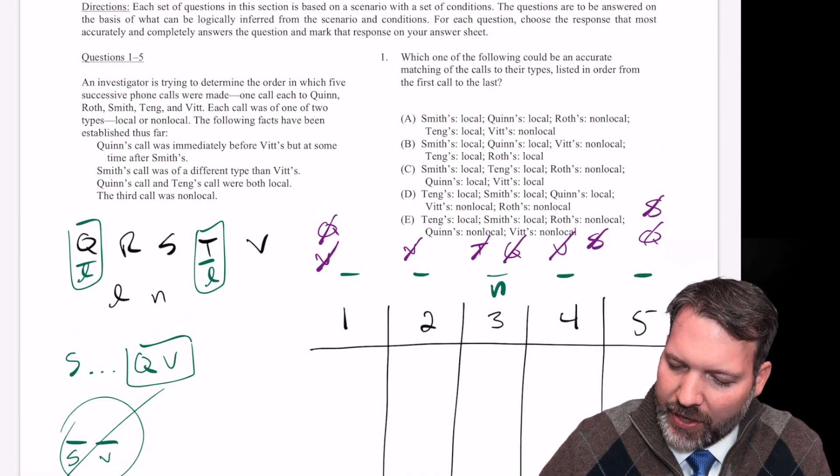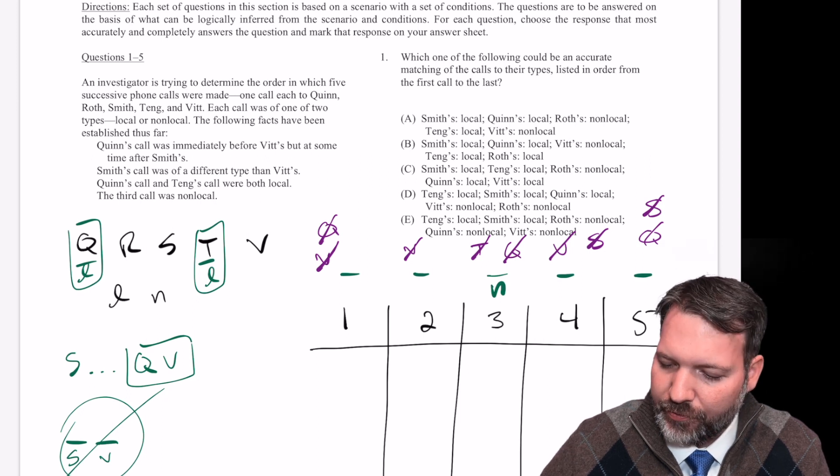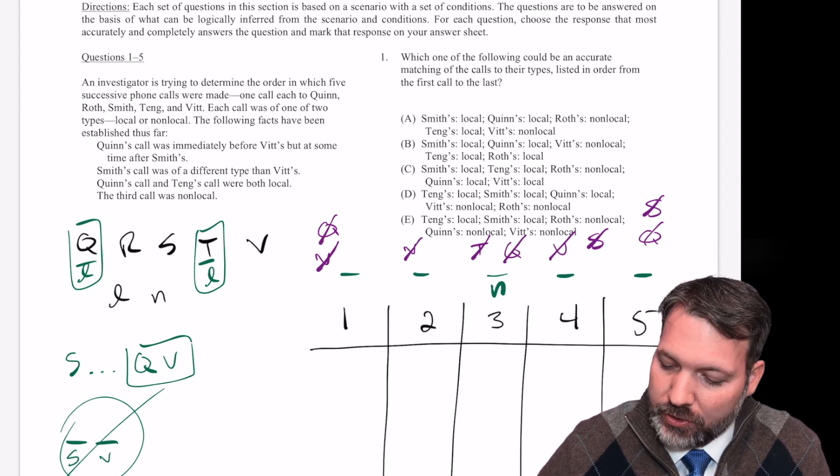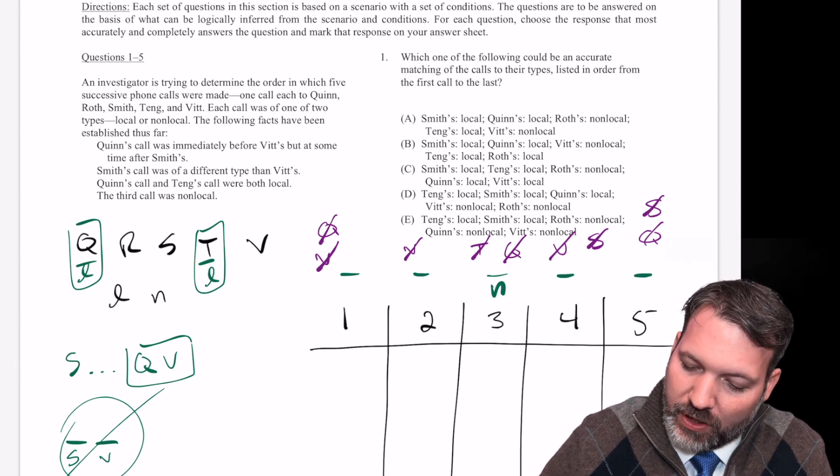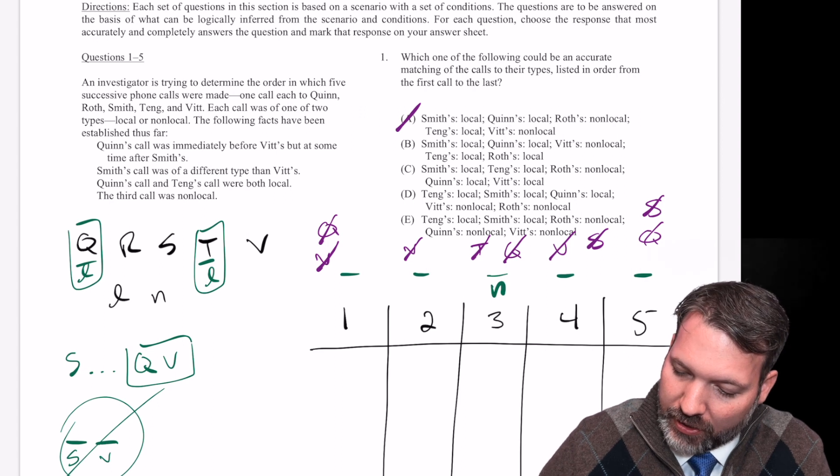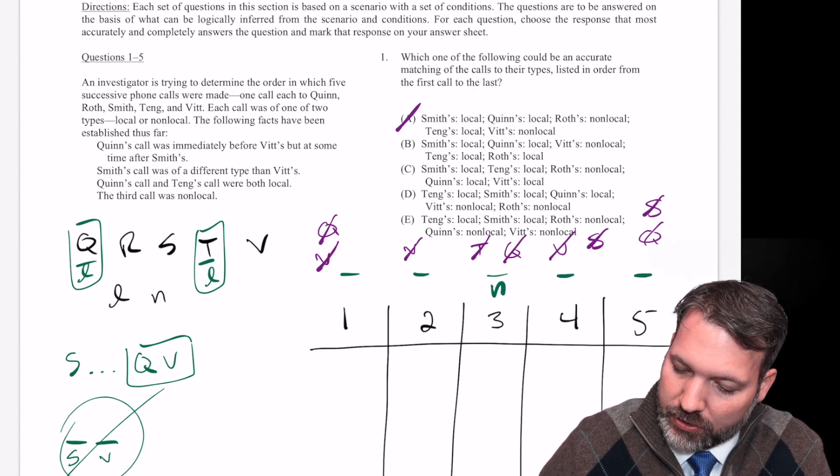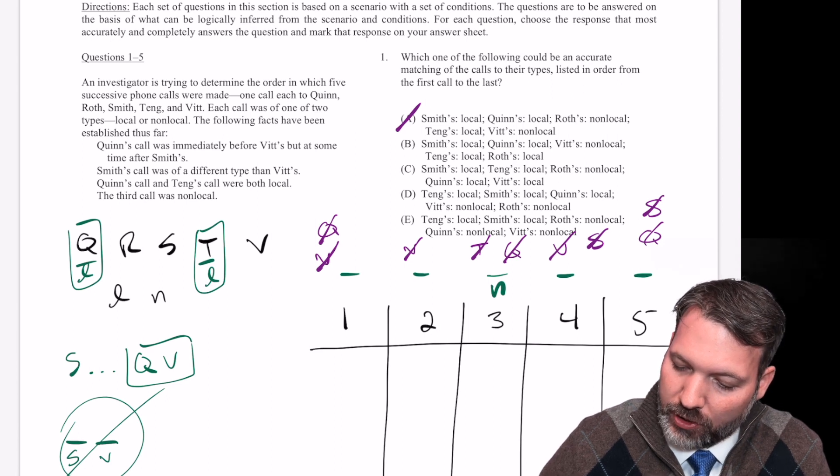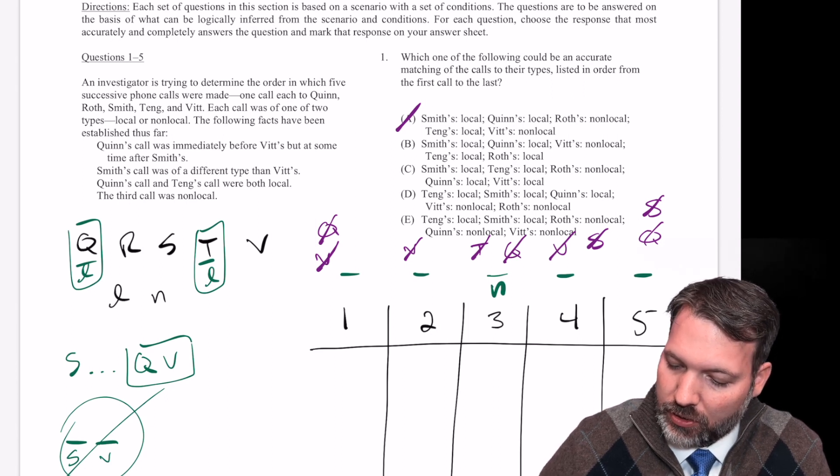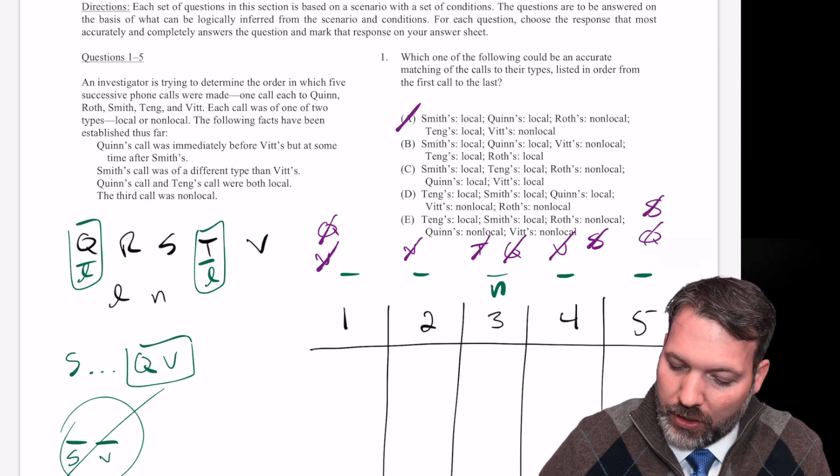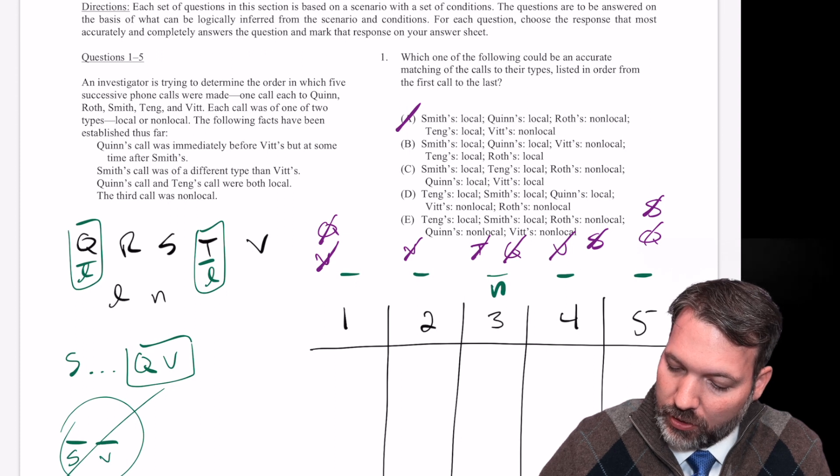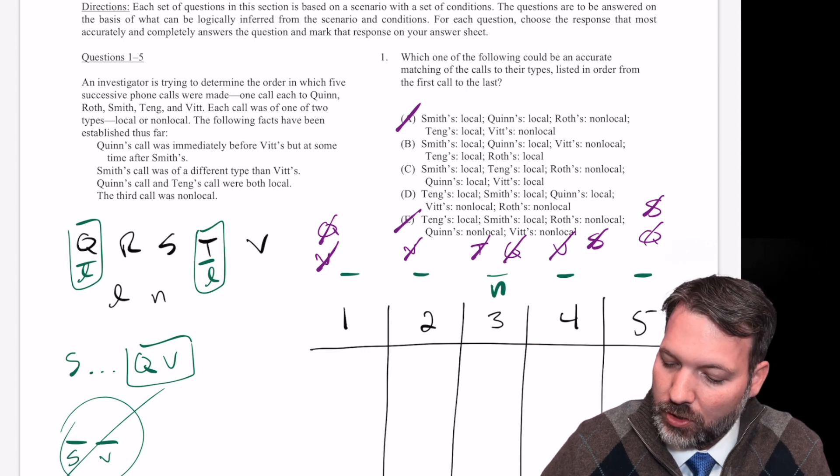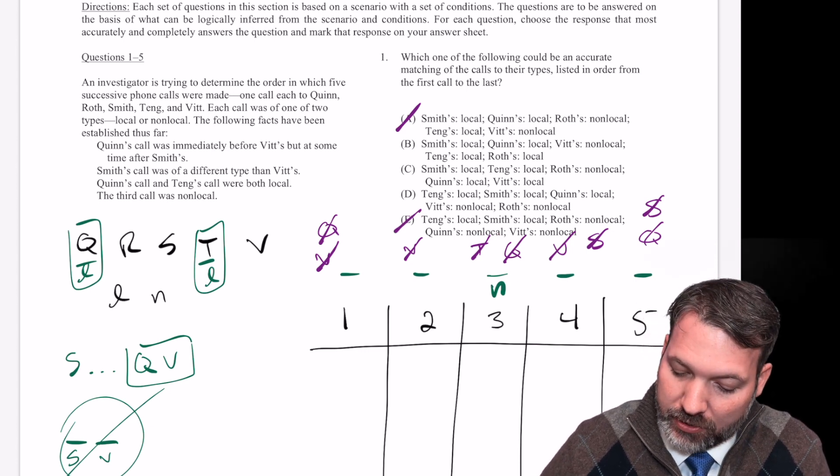Okay, number one. Which one of the following could be an accurate matching of the calls to their types listed in order from the first call to the last? Classic pick a clue style question. So S dot dot Q dot dot V, or actually specifically Q and then V. Well, A is out because Q and V aren't next to each other. B looks good, C looks good, D looks good, and E looks good. S is always before Q. B looks good, C looks good, D looks good, E looks good. Q and T are both local calls. B looks good, C looks good, Q and T local, D looks good. E is no good. Q is not a non-local call. So I don't like answer choice E.